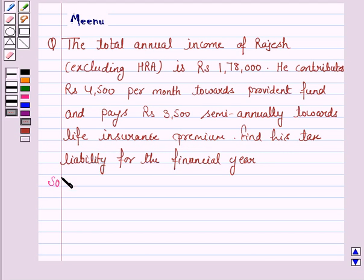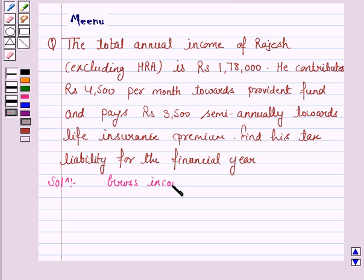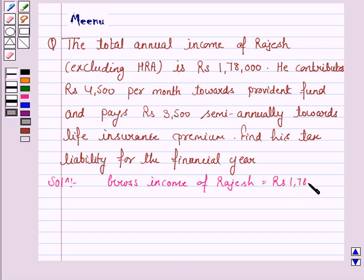The first step towards finding the tax for the financial year is to write the gross income of the assessee. So, the gross income of Rajesh is Rs. 1,78,000.